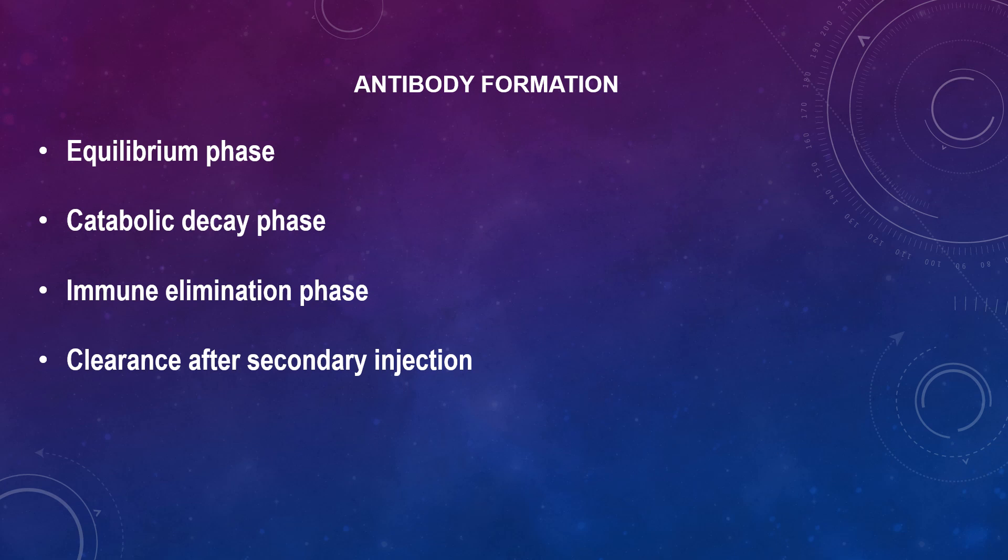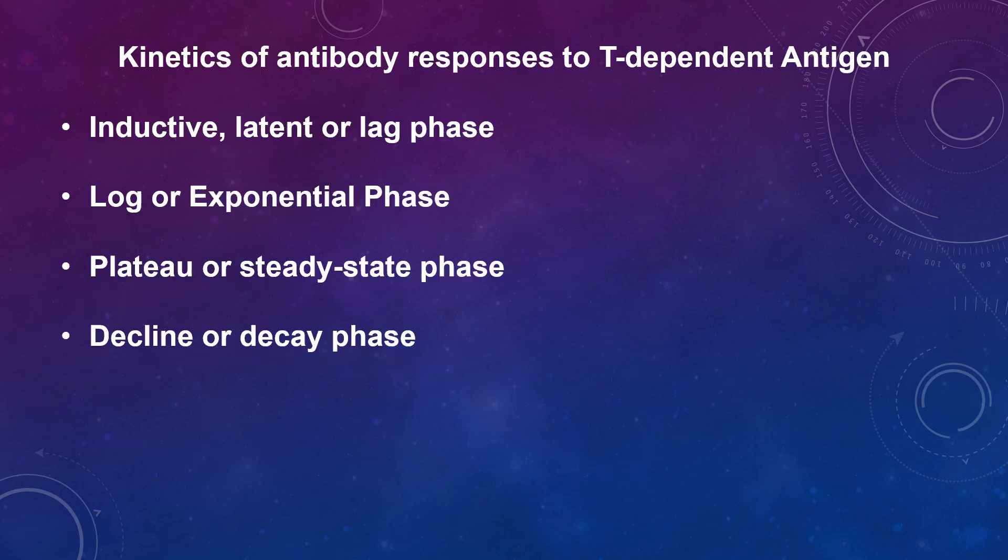Regarding clearance after the second injection: if there is circulating antibody in the serum, injection of the antigen a second time results in rapid immune elimination. If there is no circulating antibody, injection of the antigen for a second time results in all three phases, but the onset of the immune elimination phase is accelerated.